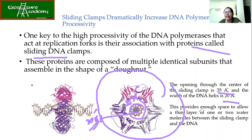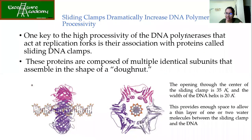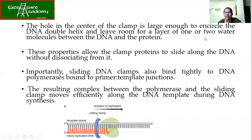This provides enough space to allow a thin layer of one to two water molecules between the sliding clamp and the DNA. Wherever protein-DNA interactions or protein-protein interactions occur, water molecules are important - this is an important interview-type question. The answer is hydrogen bonds: water molecules are required for making interactions, helping proteins interact via the water molecules present between them. The hole in the center is large enough to encircle the DNA double helix and leave room for one or two water molecules, allowing the clamp proteins to slide along DNA without dissociating.